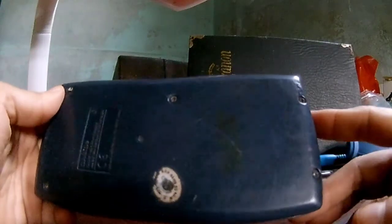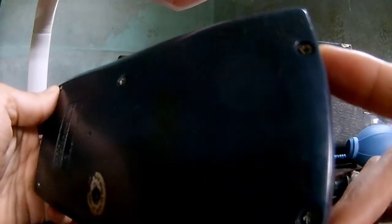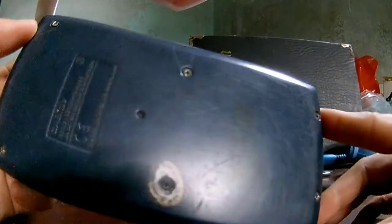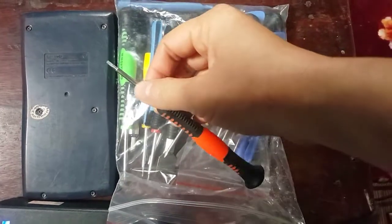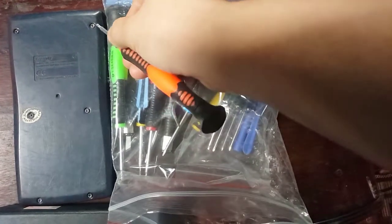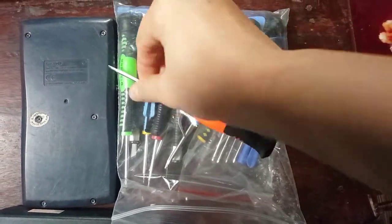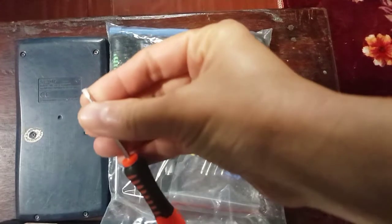Step 2. Turn the Casio calculator over and locate the 6 screws. There are 6 screws here. You might need a specific screwdriver to open them up. You can search and buy a package of screwdrivers like this for little fixes around the house.